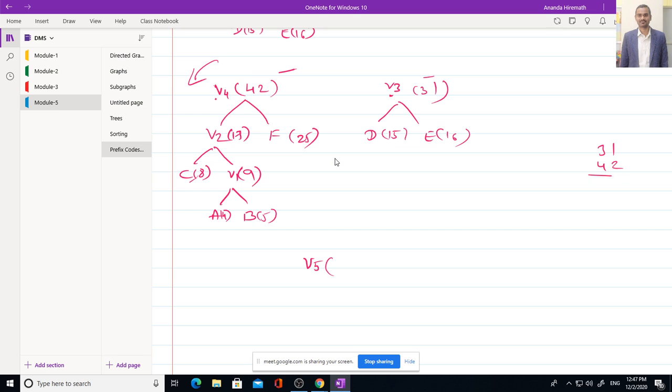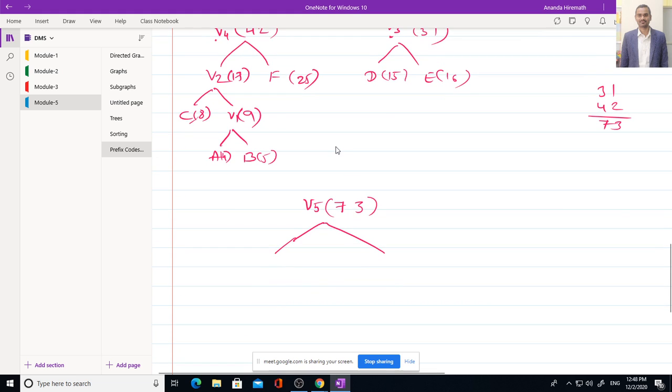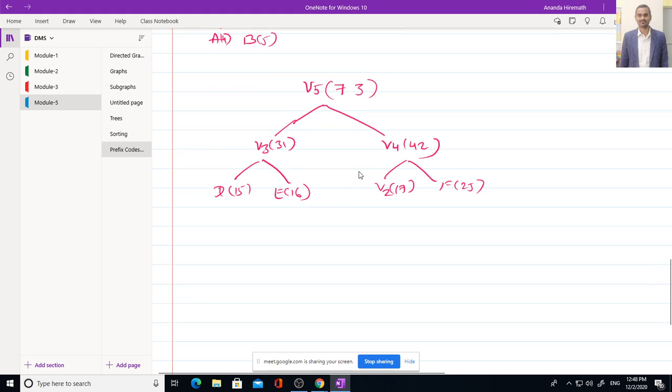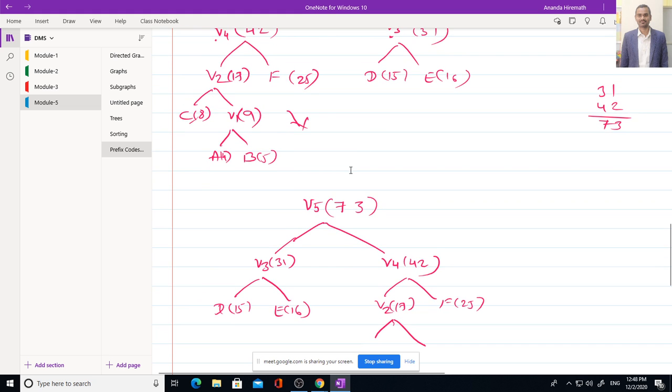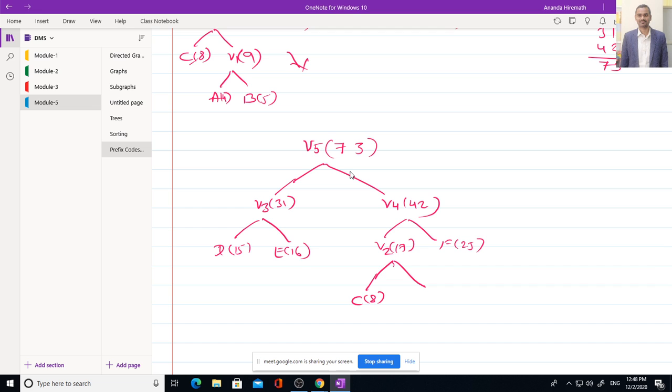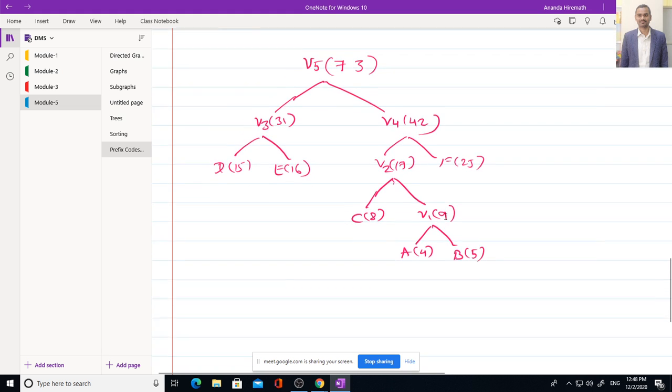Which is summation of V4 and V3. 31 plus 42 will be 73. V5 has V3 and V4. V3 can be divided as D15, E16. We have V4. V2 is 17, F is 25. V2 again has C and V1. C is 8, V1 is 9. V1 can be split into A, 4, B, 5. Now this is Huffman tree for given sequence.